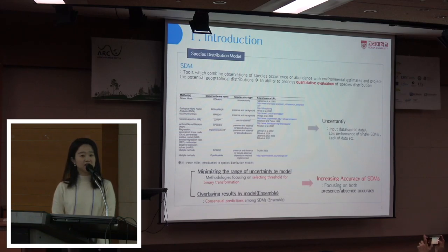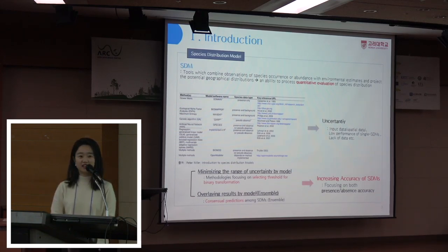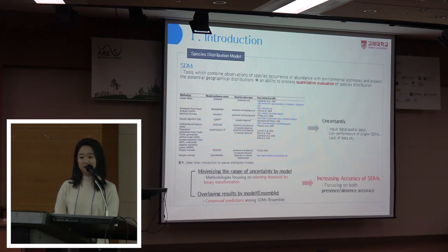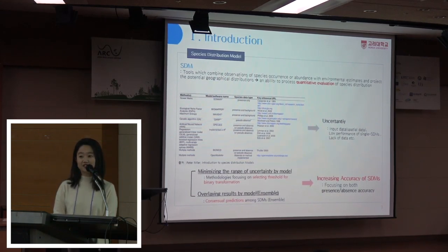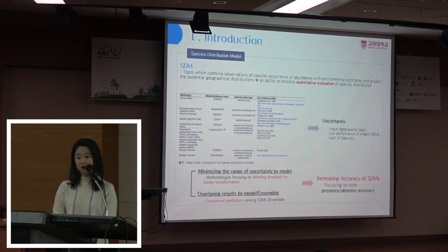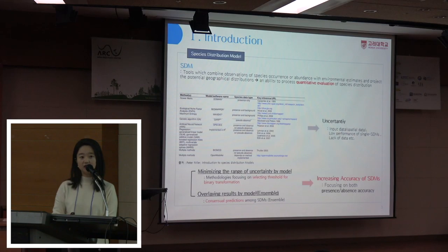SDM, short for species distribution model, is a highly useful model in a sense that it has an ability to process quantitative evaluation of species distribution. However, despite its high utilization, due to the issue of uncertainty, the use of SDM is kind of limited. For this reason, a lot of various studies are being conducted to overcome this limitation. And above all, methodologies focusing on reducing low performance of single SDM came out to be a very important issue.